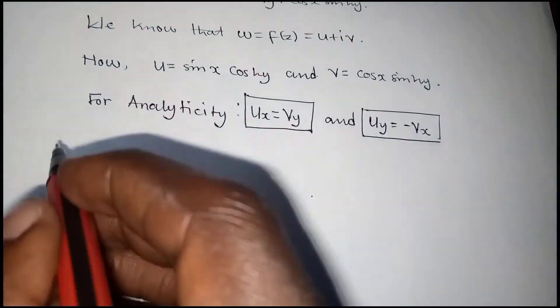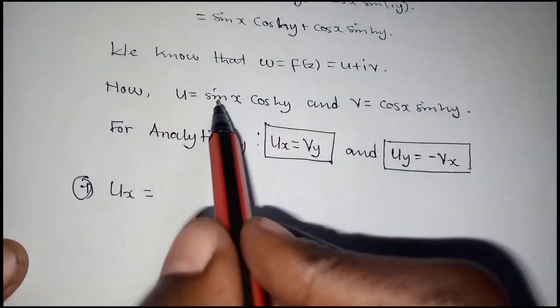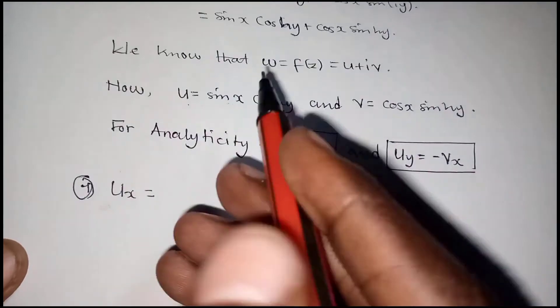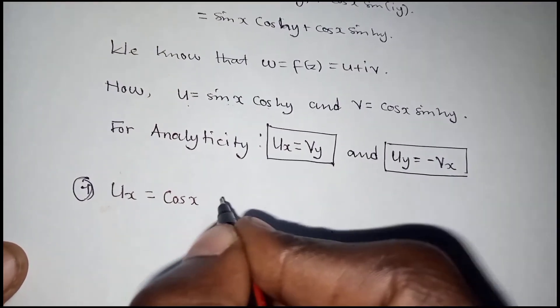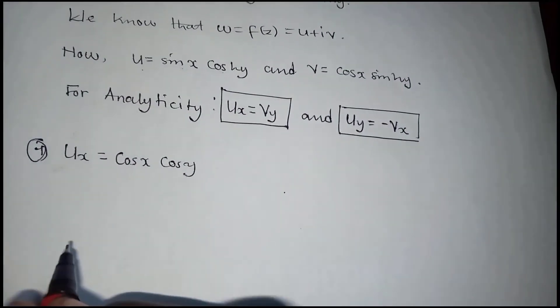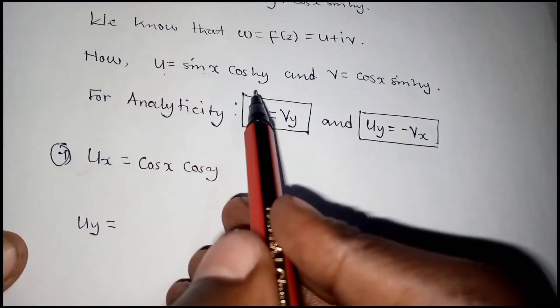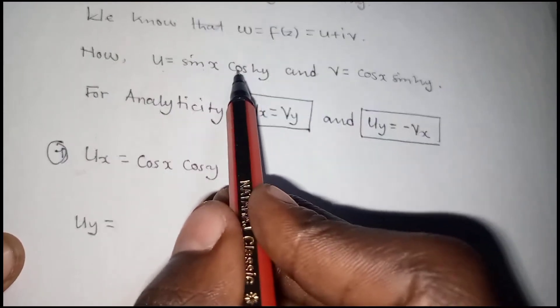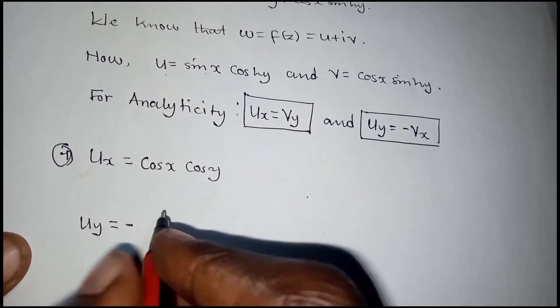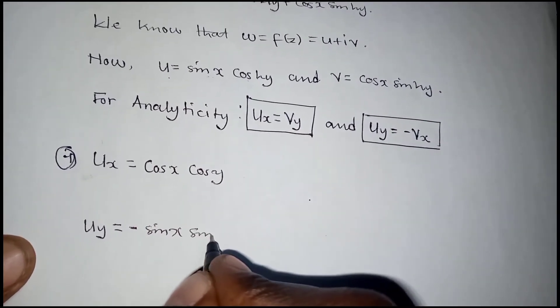Now let's take the partial derivatives. The function u is given as sine x cosh y. The partial derivative with respect to x: sine becomes cos, so we get cos x cosh y. For the partial of u with respect to y: the cosh y term differentiates to sinh y, but it changes sign, so we get negative sine x sinh y.